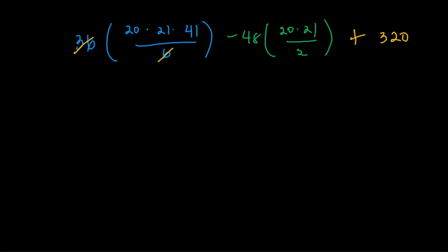All right, we could cancel out the 6. That's good. So 6 times 20 times 21 times 41. That's going to give us, the blue part, 103,320. Next, for the green part, well, the 48 and the 2 cancel out, so 24. So 24 times 20 times 21, that's going to give us 10,080. And then just add the 320.